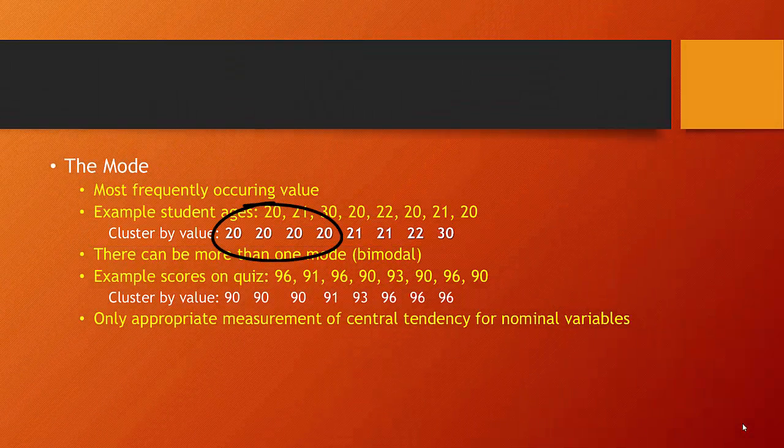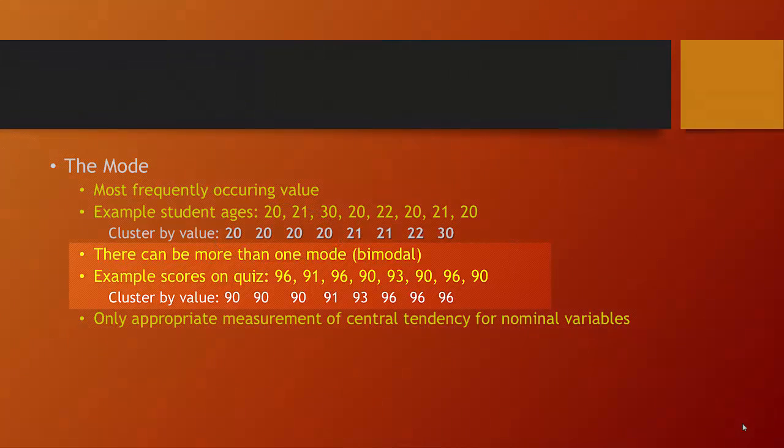There are four 20-year-olds, two 21-year-olds, one 22-year-old, and one 30-year-old. So there are more 20-year-olds than any other possible age category.